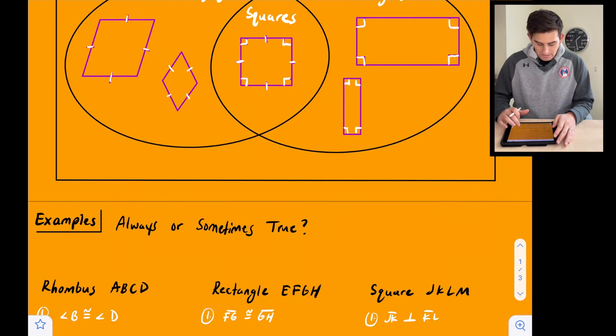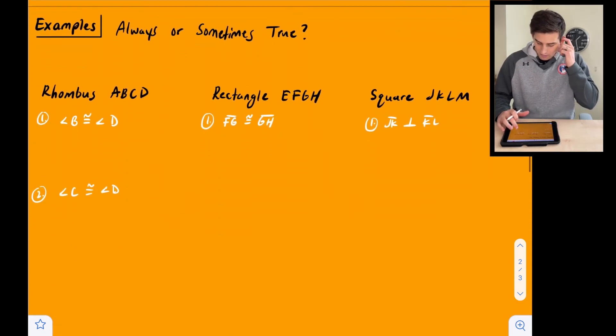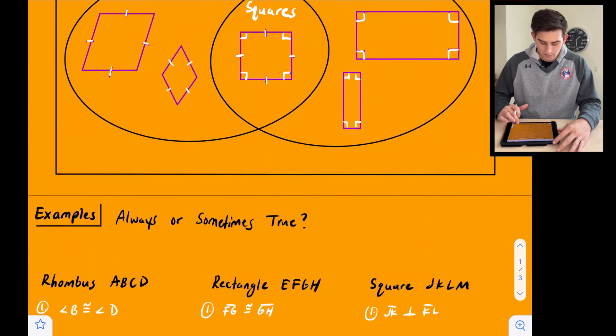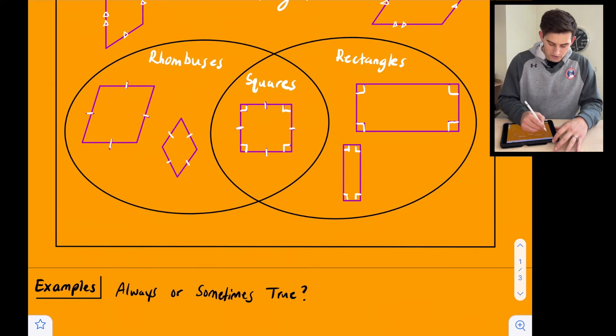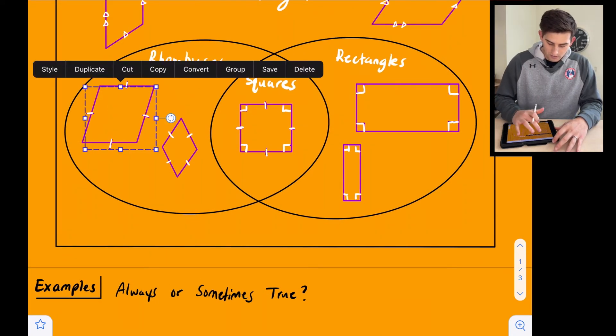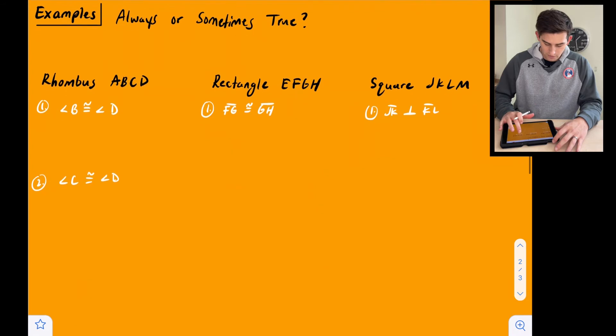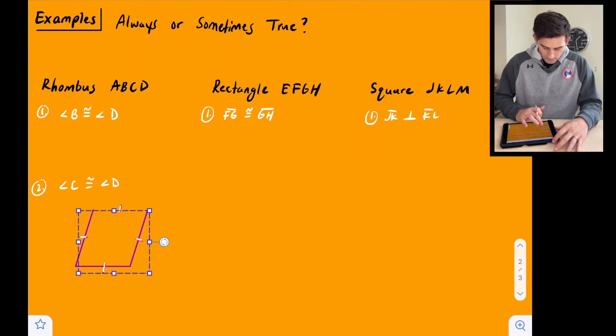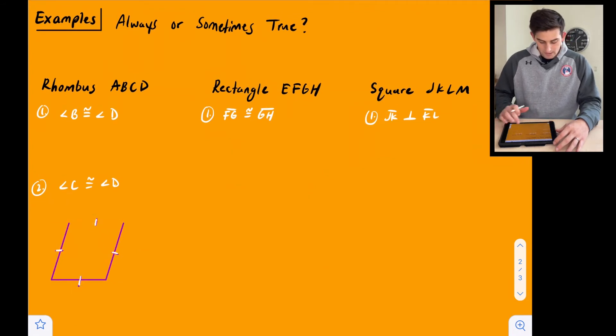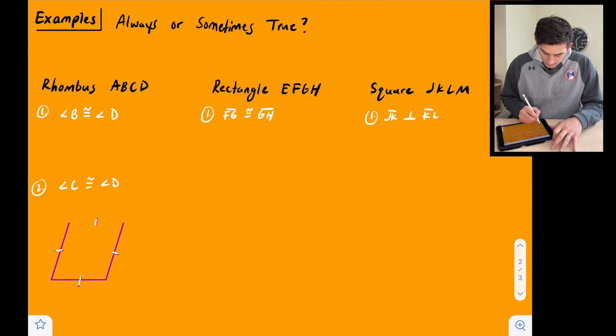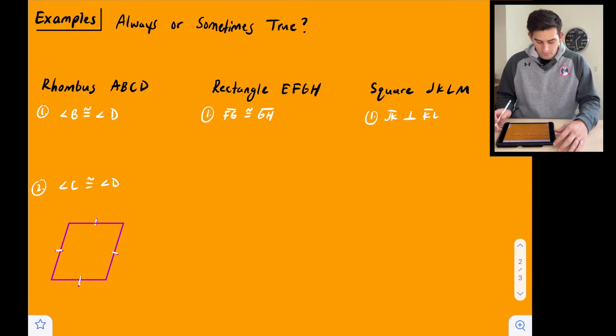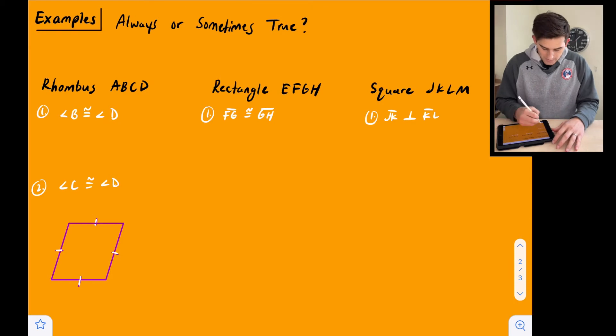Okay. So now let's look at just a couple examples here where we say, are these always or sometimes true? So we're going to look at one each, one with a rhombus, one with a rectangle, and one with a square. So in order to help us visualize this, I'm going to copy one of these shapes here and bring it down so we can use it for our questions. Okay. So for number one, we're going to use this rhombus right here. So rhombus ABCD. So I'll go ahead and label that A, B, C, D.